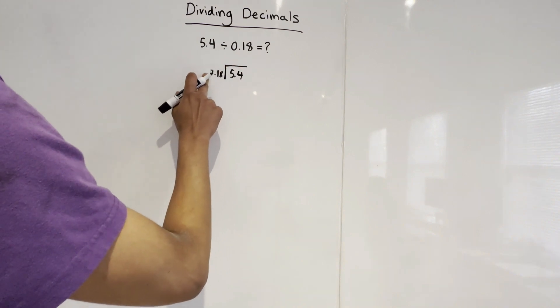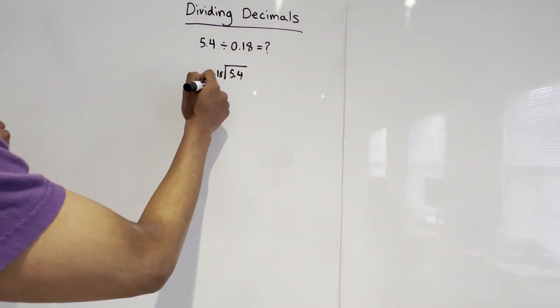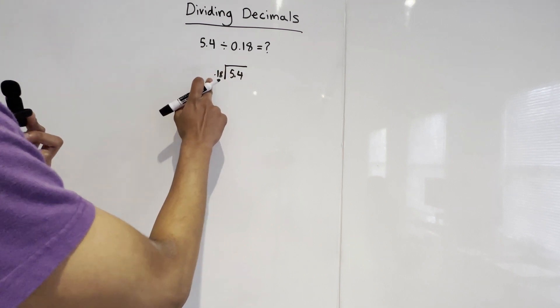We can actually just ignore the zero right now. We can just take that out because that doesn't really matter. So this is 5.4 divided by 0.18. And we're first just going to ignore these two decimal points and divide like normal.